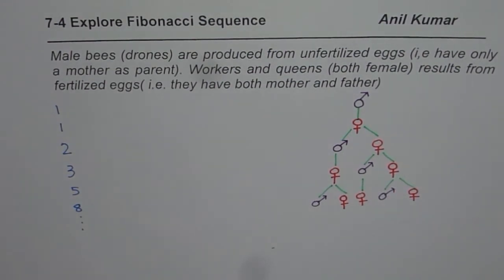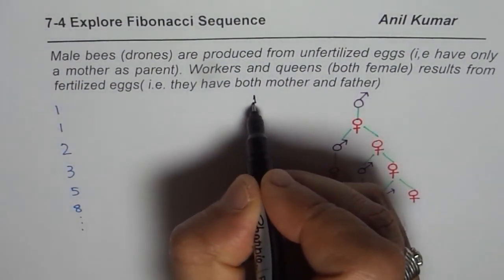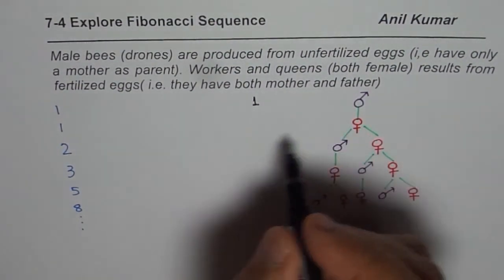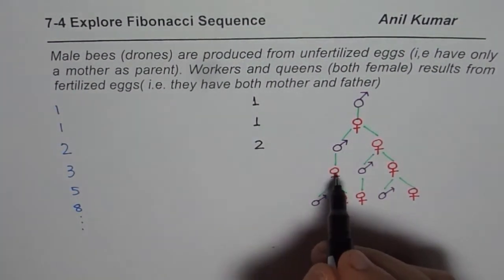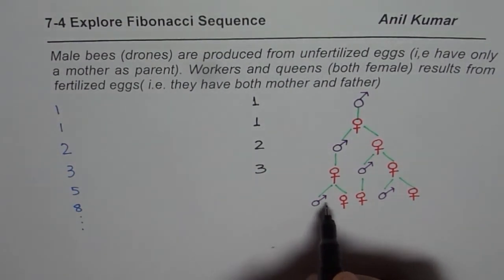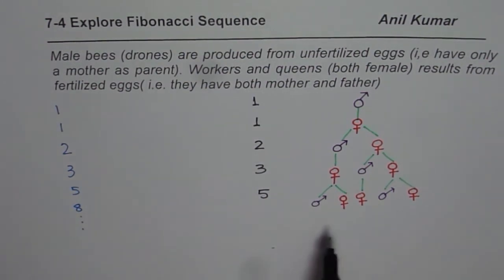What do you notice? Does this number reflect something for you? We started with number one — the number of bees here is just one. In this generation, it is still one. Then we have two of them, then three of them, then one, two, three, four, five. So if you continue this pattern, you will actually produce the very famous Fibonacci sequence. That is how it relates to so many things in nature.